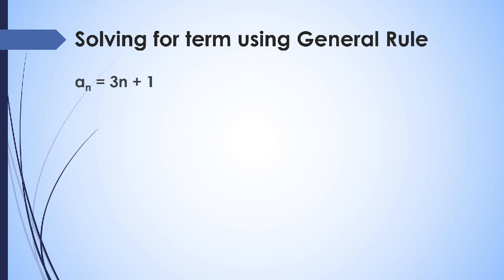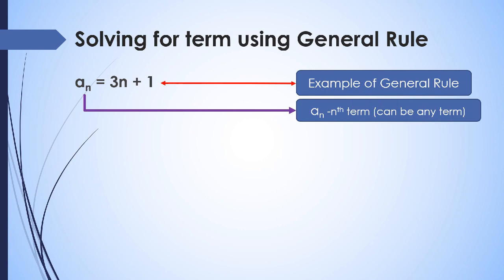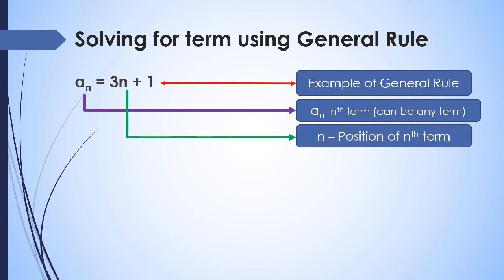As an example of a general rule, we have a sub n equals 3n plus 1. To solve for the terms of this sequence, we identify the variables: a sub n is the nth term, which can be a sub 1, a sub 2, a sub 3, and so on. The variable n is the position of that term — if a sub n is a sub 5, then n equals 5.